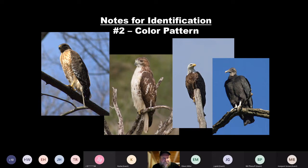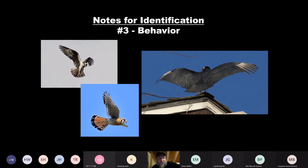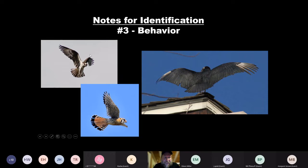Number three: behavior. What's the bird doing? This is actually really important. Bird guides are getting a lot better at including action shots — images of what birds look like soaring, hovering, diving, or sitting on the water. Here in the upper left is an osprey that's hovering over the water before it drops in after a fish. Kestrels also hover, but you can see it's two very different postures and two very different colors. Vultures will often bask in the sun, warming up their feathers as part of their daily routine. If you see a larger bird of prey doing this, it's probably one of our vultures.